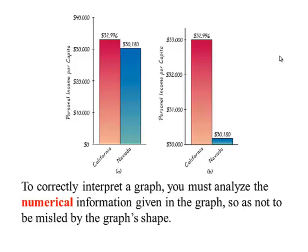Here's another example: personal income per capita for two states, California and Nevada. When we start at zero, the differences are not exaggerated. If we started at 30,000, the differences would be exaggerated. To correctly interpret a graph, you must analyze the numerical information in the graph so you will not be misled by the shape of the graph.